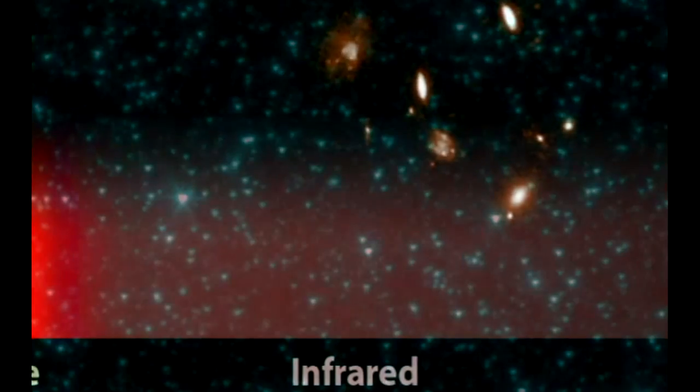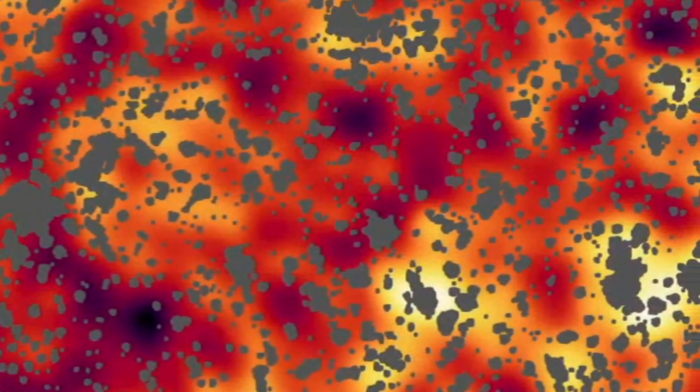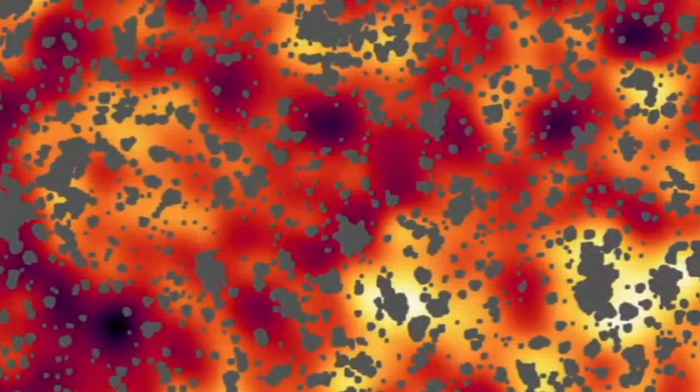These distant objects are so tiny and faint, they can't be seen individually. So astronomers actually blur the images. This brings out the combined light patterns that provide clues about these mysterious objects. It's like looking at a fuzzy picture of fireworks and figuring out what the sparks are like.